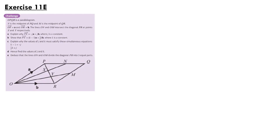Our third question is from exercise 11e. opqr is a parallelogram; n is the midpoint of pq and m is the midpoint of qr. The vector op equals a and the vector or equals b. The lines on and om intersect the diagonal pr at points x and y respectively. Part a asks us to explain why the vector px equals minus j lots of a plus j lots of b, where j is a constant.